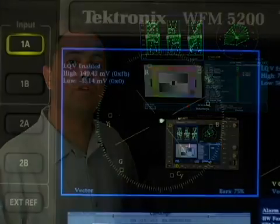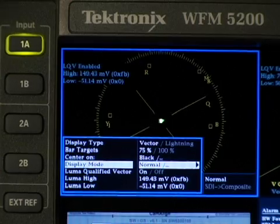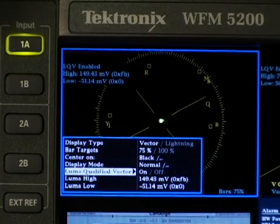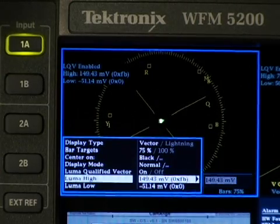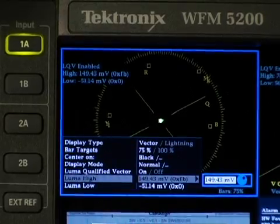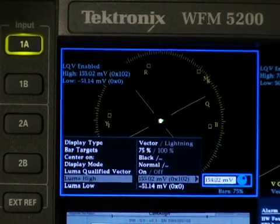One of my favorite new Tektronix innovations is the Luma Qualified Vector Display. This is an exclusive Tektronix display commonly referred to as LQV. You can find this in the settings for the vectorscope display. It allows you to display a specific tonal range in the vectorscope, for example, to just see the highlights or just the shadows.